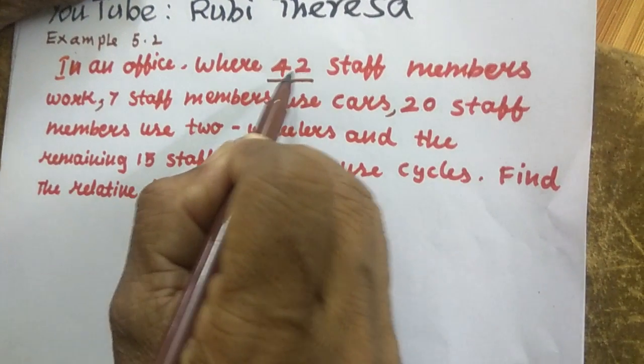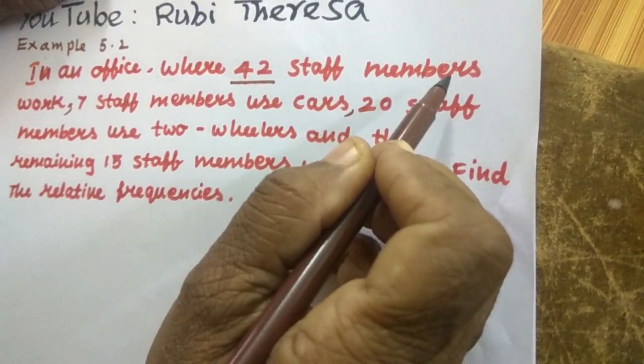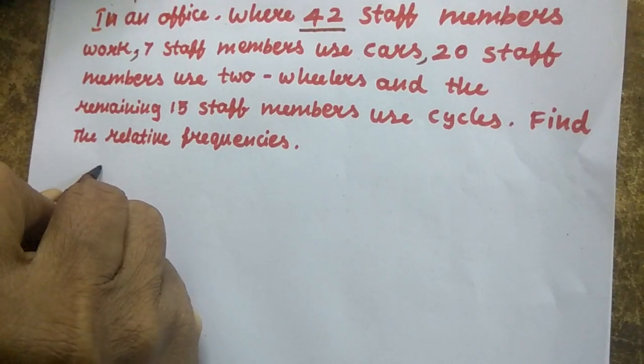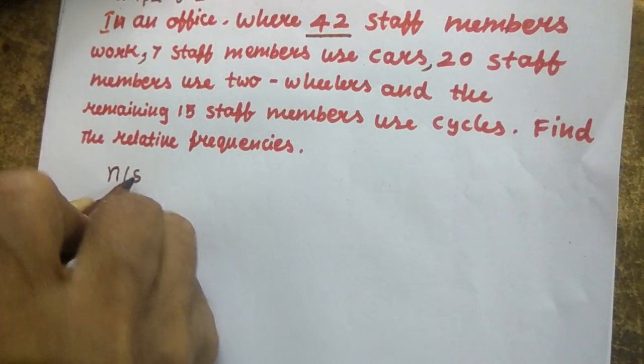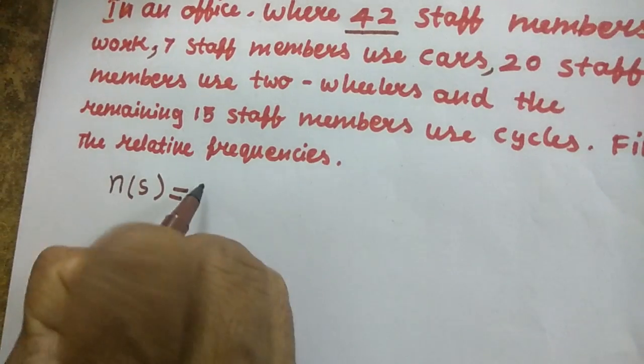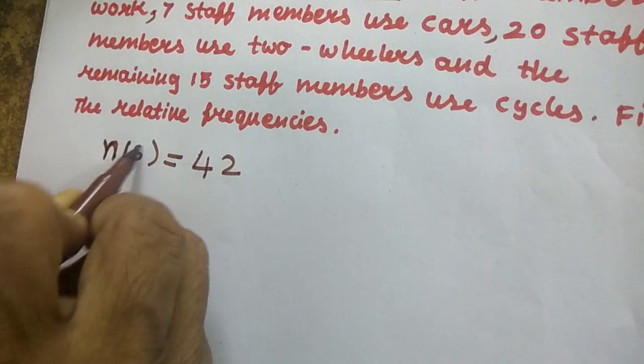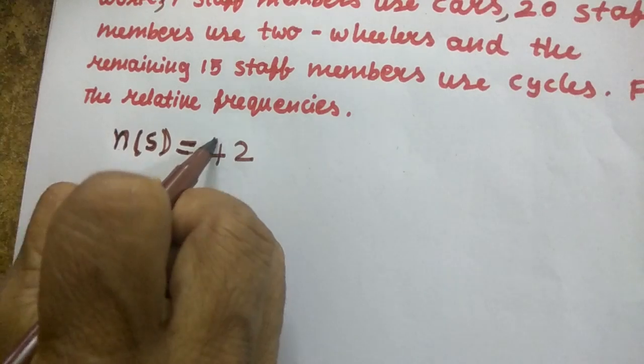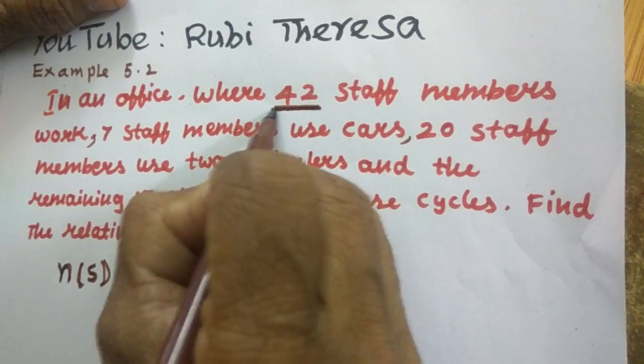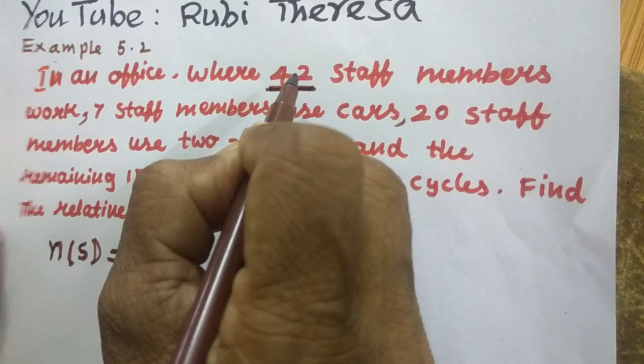In the problem they have given 42 staff members work. So first N of S equal to 42, because total number of staffs is 42.